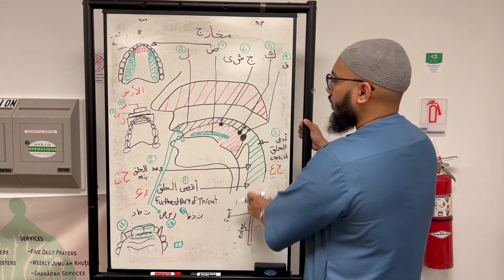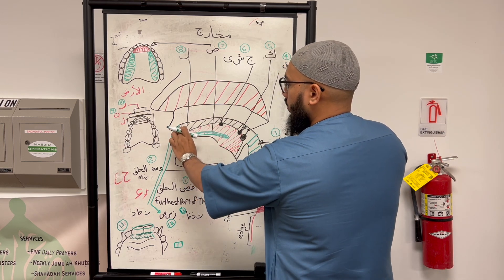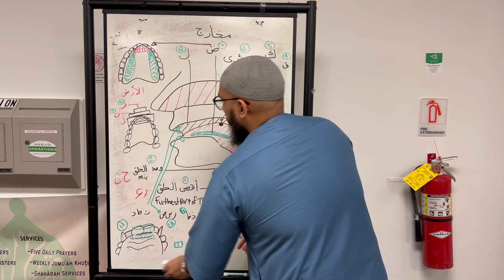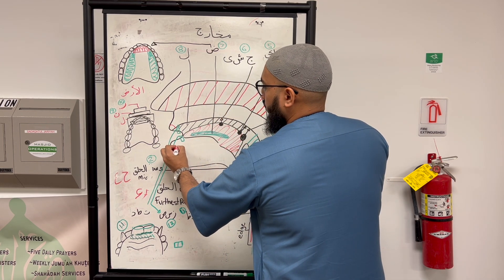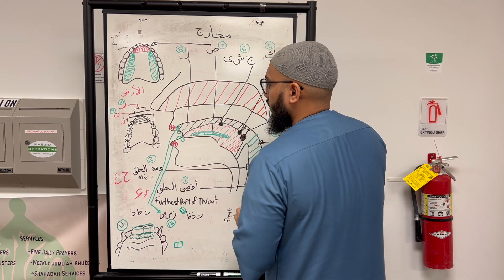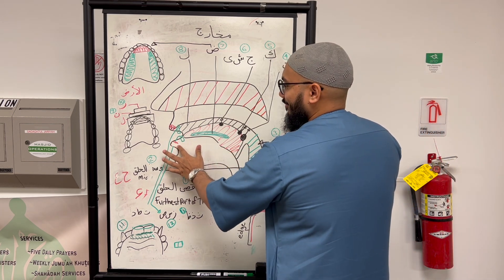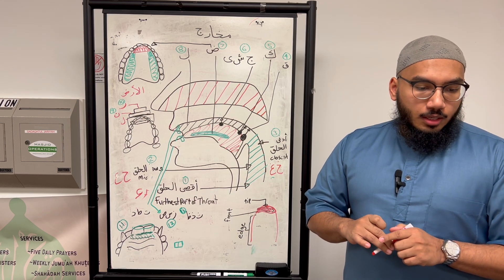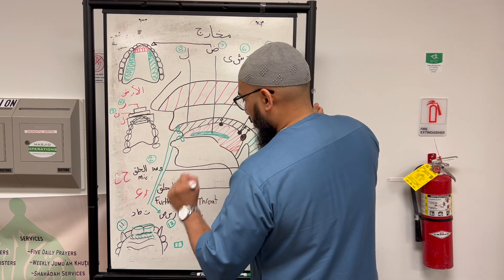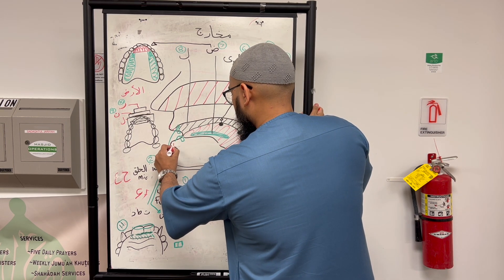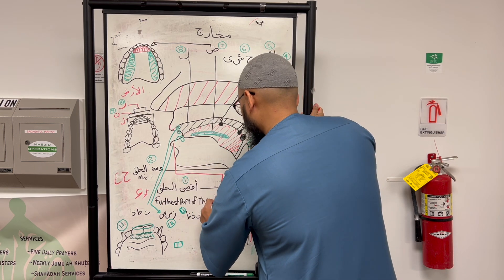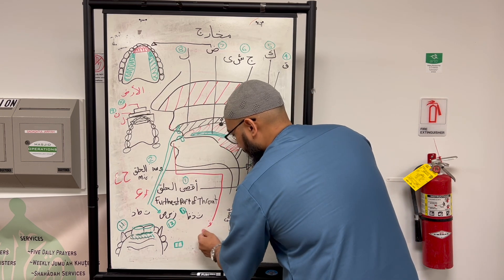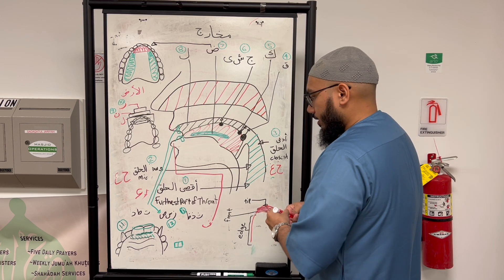We have now completed the throat, the mouth, and all the articulation with the tongue and teeth. We finally move on to the lips. The next Makhraj is using the lips — that is going to be the Makhraj of Fa. That is Makhraj number 14.